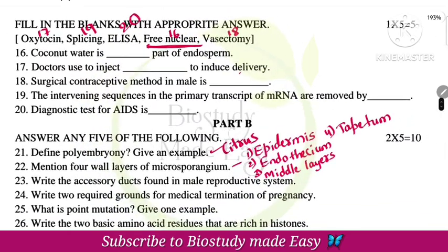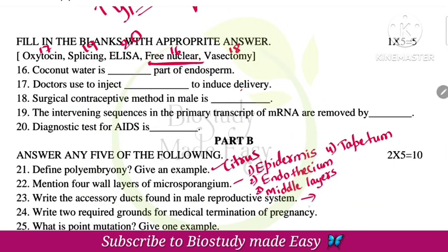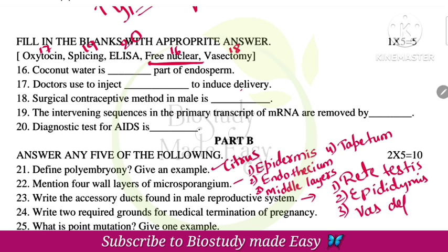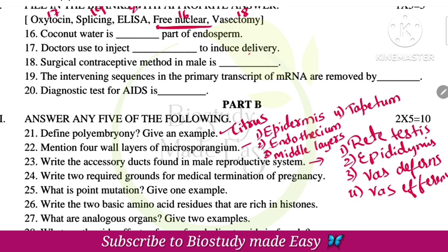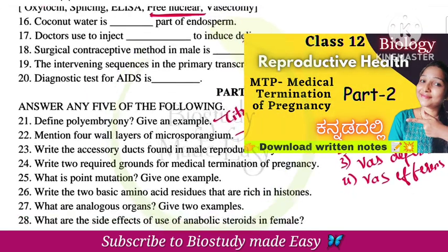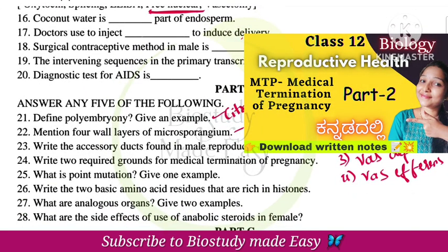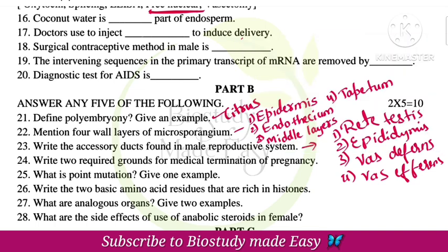Write the accessory ducts found in the male reproductive system: rete testis, epididymis, vas deferens. Write two required grounds for medical termination of pregnancy — the conditions for MTP. What is point mutation? Give one example. A point mutation is a change in a single base pair in DNA. The classic example is sickle cell anemia — this is compulsory.